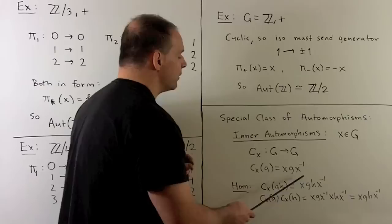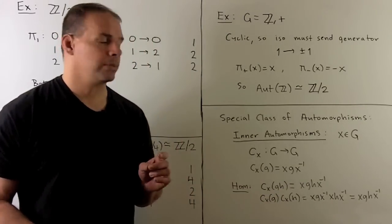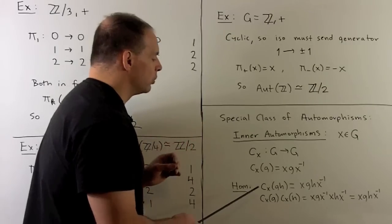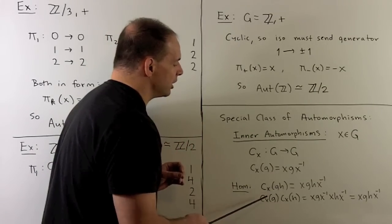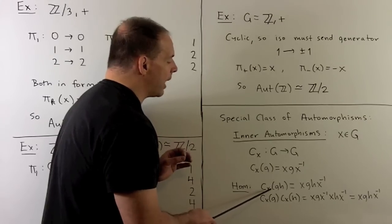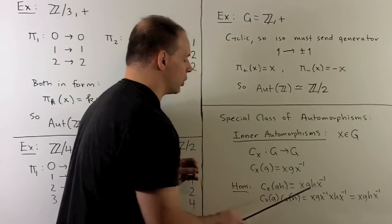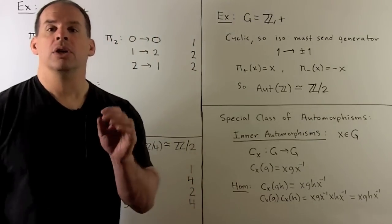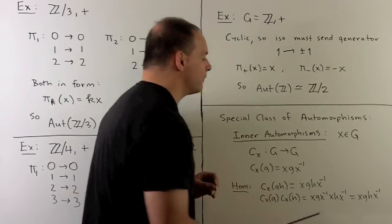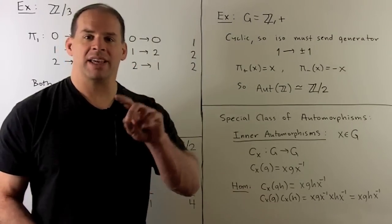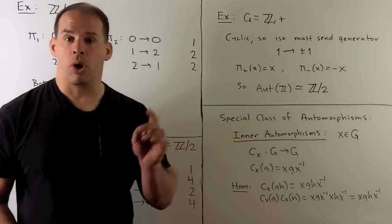This is an automorphism, so we need to show homomorphism and bijection. For the homomorphism property, we calculate on gh in two ways. Applying c_x to gh gives xghx⁻¹. Doing it separately: (xgx⁻¹)(xhx⁻¹), and the x⁻¹x cancels in the middle to give xghx⁻¹. So c_x is a homomorphism.